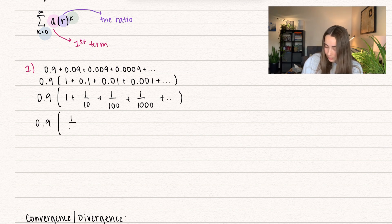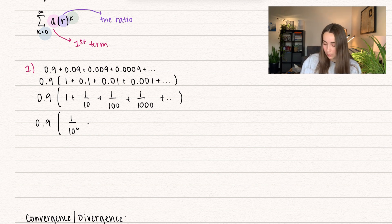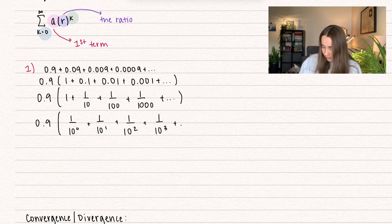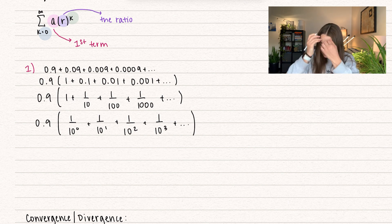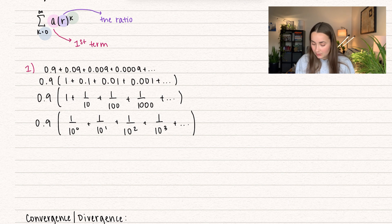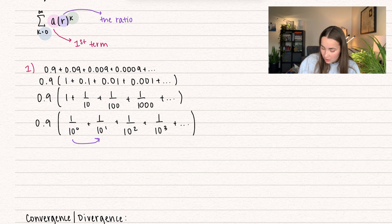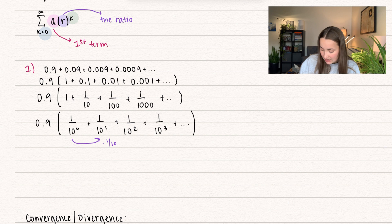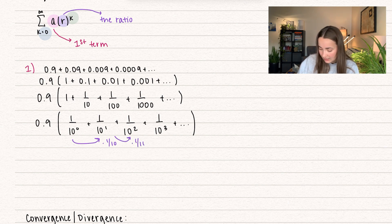So 0.9 — we can represent 1 as 1 divided by 10 to the power of 0, right? 10 to the power of 0 is 1, 1 divided by 1 is 1, plus 1 over 10 to the power of 1, plus 1 over 10 to the power of 2, and then 1 over 10 to the power of 3. So notice we can represent this with an explicit formula — in the denominator, k is going to be the exponent. Another way to think about it: the common ratio to get from 1 over 10 to the power of 0 to 1 over 10 is you multiply by 1 over 10, and then to get from 10 to the power of 1 to 10 to the power of 2, you multiply again by 1 over 10.